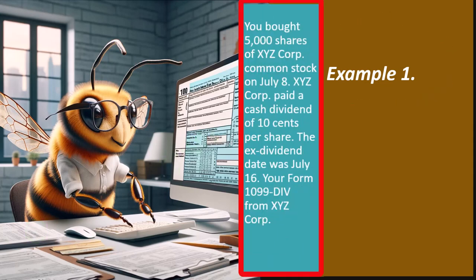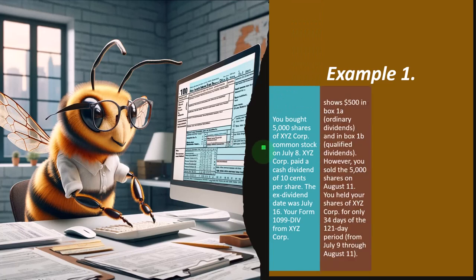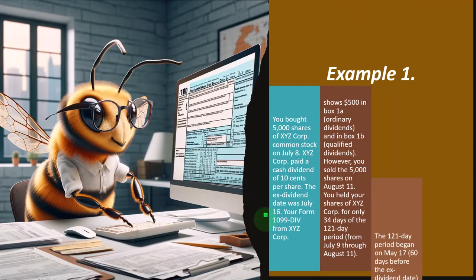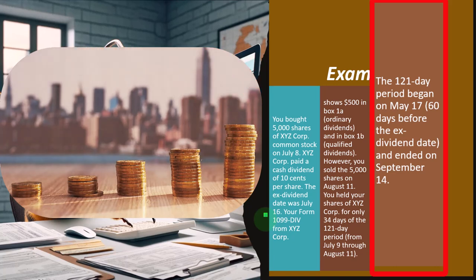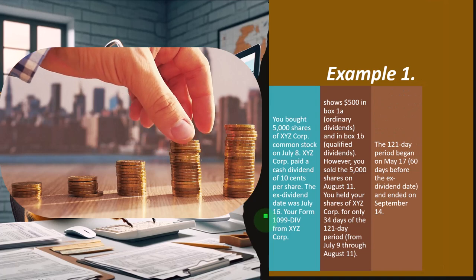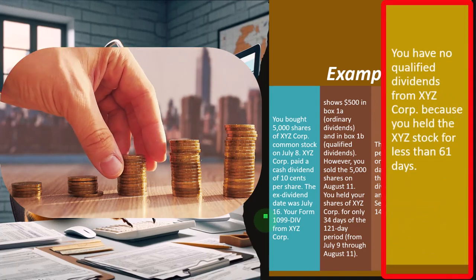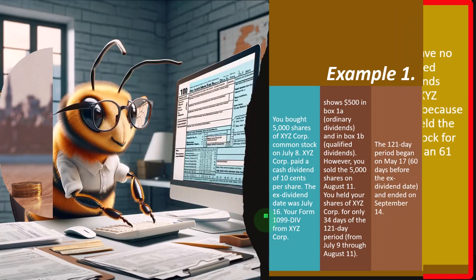Example one: You bought 5,000 shares of XYZ Corp common stock on July 8th. XYZ Corp paid a cash dividend of 10 cents per share; the ex-dividend date was July 16th. Your Form 1099-DIV shows $500 in box 1A and $500 in box 1B. However, you sold the shares on August 11th. You held your shares for only 34 days of the 121-day period from July 9th through August 11th. The 121-day period began May 17th, 60 days before the ex-dividend date. You have no qualified dividends.